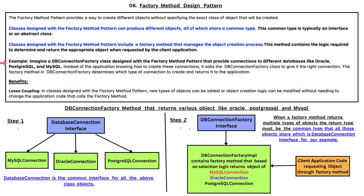The Factory Method in DBConnectionFactory determines which type of connection to create and returns it to the application. One of the benefits of the Factory Method Design Pattern is Loose Coupling. In classes designed with the Factory Method Pattern, new types of objects can be added or object creation logic can be modified without needing to change the application code that calls the Factory Method.